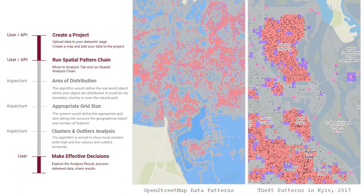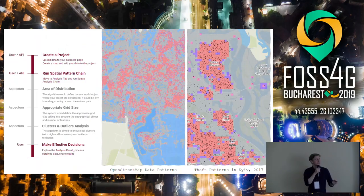If you're not just researching the intensity of data but also want to find clusters and outliers within your dataset, I recommend using clusters and outliers analysis, which returns data into four categories: clusters with high values, clusters with low values, and then outliers — high values surrounded by low values, or low values surrounded by high values. Within the whole dataset range, you can normalize all features, find patterns across the dataset, and make decisions based on the analysis. It would be much more sufficient to move forward.